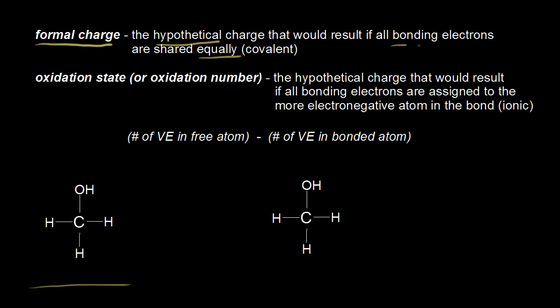We need to think about the bonding electrons, or the electrons in those bonds around carbon. We know that each bond consists of two electrons. So the bond between oxygen and carbon consists of two electrons, and the same for the bond between carbon and hydrogen. Each bond consists of two electrons, so we can go around and put in all of the bonding electrons. To assign a formal charge to carbon, we need to think about the number of valence electrons in the free atom — the number of valence electrons carbon is supposed to have. We already know that carbon is supposed to have four valence electrons.